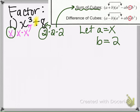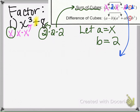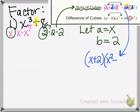So wherever there's an a in the formula, we'll put x — we'll put an x here, here, and here — and wherever there's a b, we're going to put a two. Therefore the formula gives us x plus two in parentheses, and then x squared minus — we don't write this as x two, instead we write it as two x — and then two squared makes four.